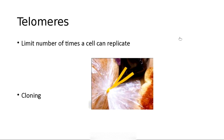Evidence came largely from Dolly the sheep — the first cloned mammal, named apparently after Dolly Parton — who died at a very young age. They said the telomere proved it: she was already old when she was born. This theory has held on quite a while.